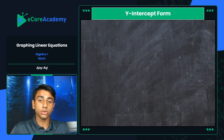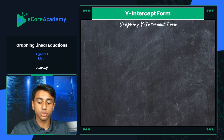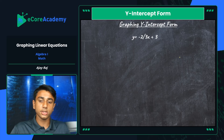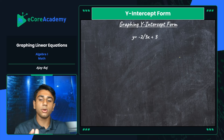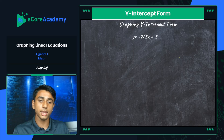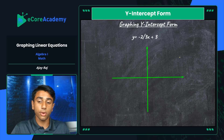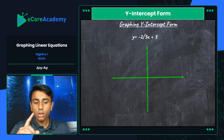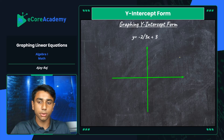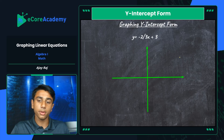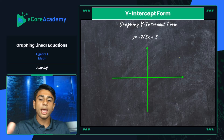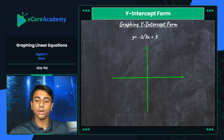We're going to start with the y-intercept form, also known as the slope-intercept form. We're given the equation y equals negative two-thirds x plus three. On the right-hand side, our slope is negative two-thirds and our y-intercept is three. The first thing we want to do is create our graph. One point that's automatically given in slope-intercept form is always your y-intercept — that's essentially what the equation is derived from, both the slope and that y-intercept value of positive three.